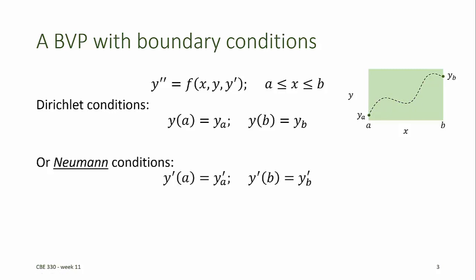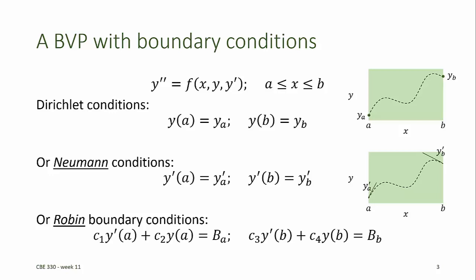We can also define what are called Neumann conditions. The Neumann conditions are defined by specifying the derivatives of Y at the points A and B in the domain. That's illustrated by the cartoon, where the broken line represents our solution and we know the slope of the tangent line at Y(A) and the slope of the tangent line at Y(B). We can also have what are called Robin boundary conditions. The Robin boundary conditions are defined as a known value for some linear combination of Y and its first derivative at two points in the domain — Y at A and its slope are combined to give a known value, and Y at B and its slope are combined to give a known value.